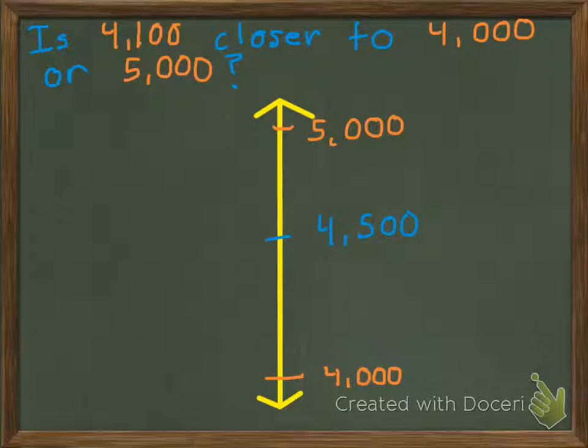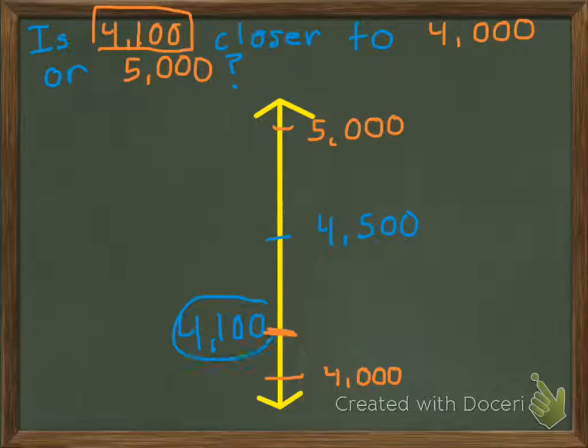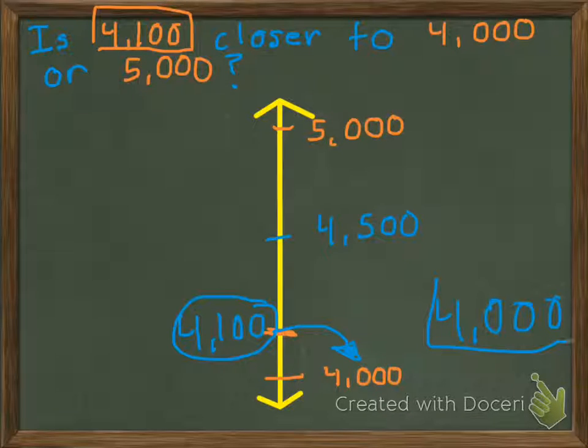So we need to go back and we need to say, is 4,100 closer to 4,000 or is it closer to 5,000? Well, it's below the halfway mark, right here, so it seems to me that 4,100 is closer to 4,000. So we just rounded 4,100 down to 4,000.